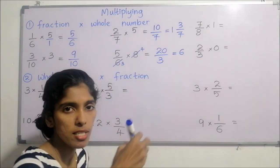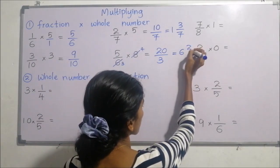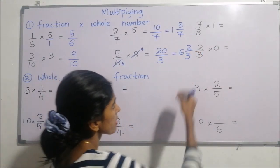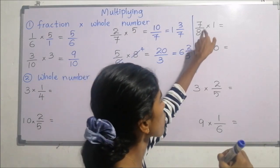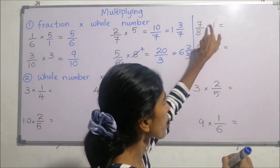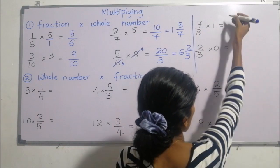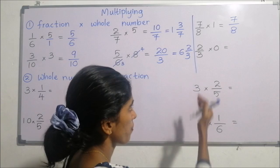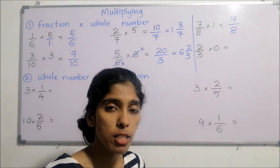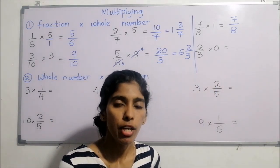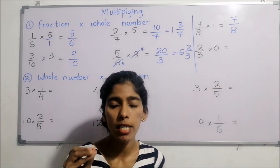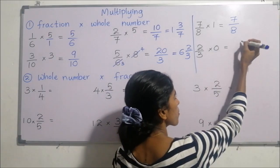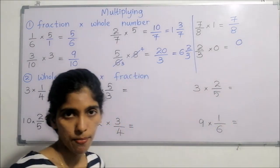Next, seven times one is seven over eight — a proper fraction. When we multiply any value by zero, the result is also zero. For whole number by a fraction, the same method applies.